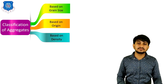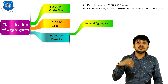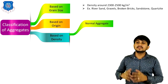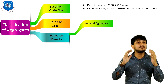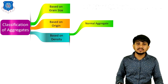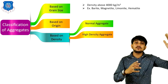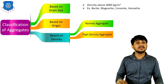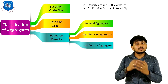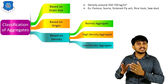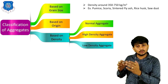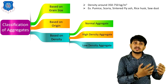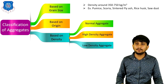Classification based on density: the first type is normal aggregate, with a density of around 2300 to 2500 kg per cubic meter. Examples are river sand, gravels, broken bricks, and sandstone. The second type is high density aggregates, with density above 4000 kg per cubic meter. Examples are barite, magnetite, limonite, and hematite. The third type is low density or lightweight aggregates, with density around 350 to 750 kg per cubic meter. Examples are pumice, scoria, rice husks, and cinders.